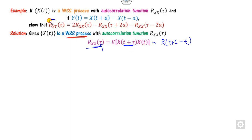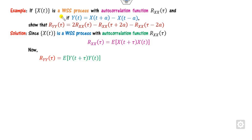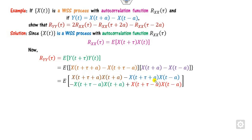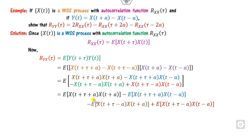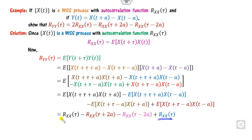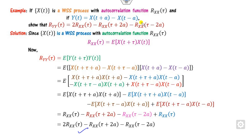Now find the autocorrelation of y(t) = x(t+a) + x(t-a). Starting from the definition, substitute y(t+τ) and y(t). Opening the bracket gives terms with differences: τ, τ+2a, τ-2a, and τ again. So R_yy(τ) = 2R_xx(τ) + R_xx(τ+2a) + R_xx(τ-2a), which is the required result expressed purely in terms of τ.